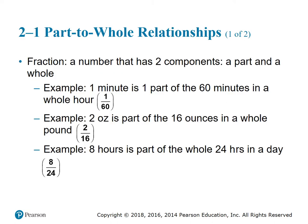A fraction is a number that has two components: a part and a whole. A minute is one part of 60 minutes in a whole hour, so this relationship of part to whole can be shown in a fraction. One is called the numerator and represents the part of the whole, and 60 is called the denominator and represents the whole or the sum of the parts.